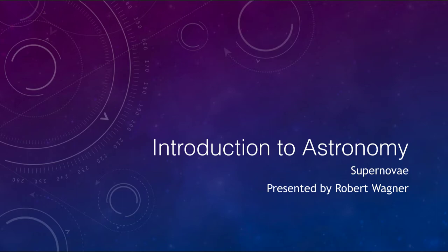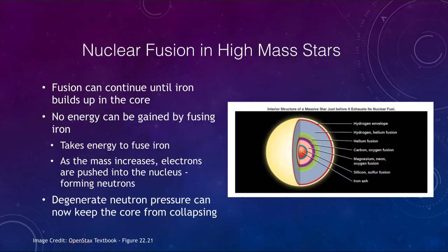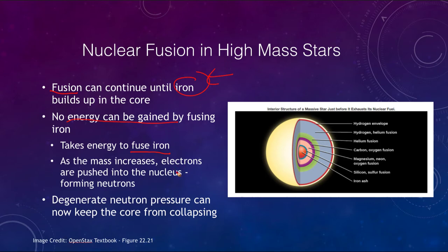What is happening with these higher mass stars? As you may recall, when we look at nuclear fusion, the fusion can continue until iron is built up in the core. Once we get to iron, we cannot gain any energy — it actually takes energy to fuse iron together. As the mass increases, the electrons in the central portion are pushed into the nucleus of the atom, forming neutrons, so essentially the central portion will become a great big ball of neutrons.